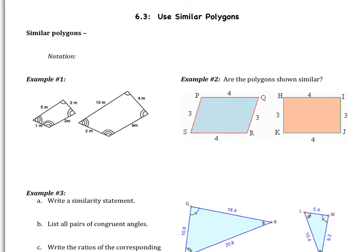You'll see the definition at the top: similar polygons have angles that are congruent, but the sides are proportional. That means all the sides change by the same factor — they're all multiplied by 2 or all divided by 5. That's what it means for the sides to be proportional, and then the angles all have to be congruent. If two polygons are similar, we use a little tilde as the notation — it's like the top part of the congruency sign.